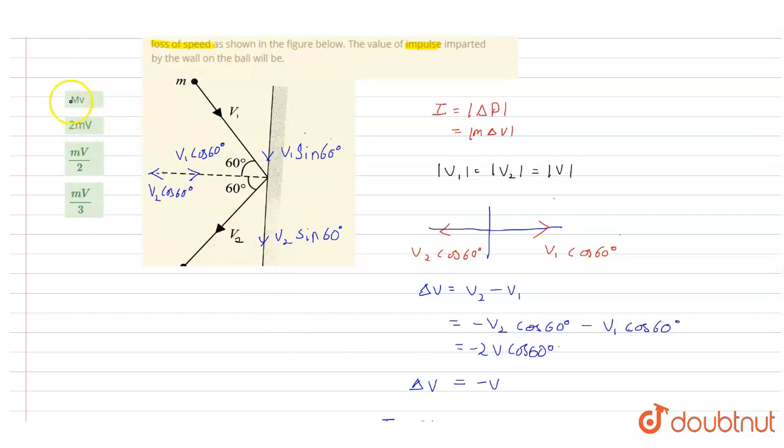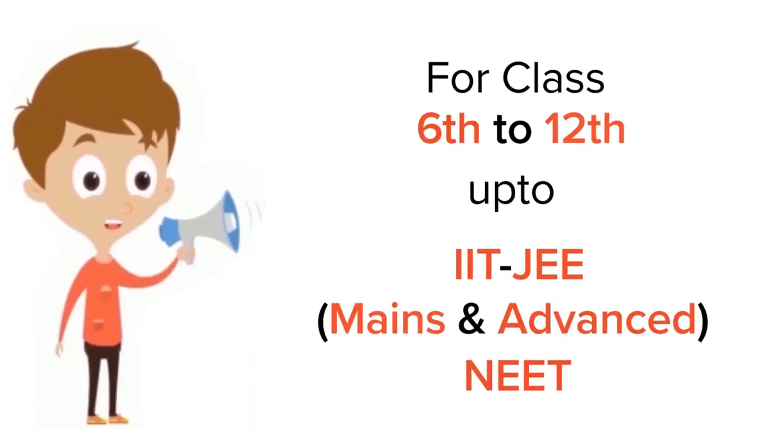That means our correct option for this answer will be option number 1, mv. For class 6 to 12, IIT-JEE and NEET level, trusted by more than 5 crore students, download Doubtnet app.